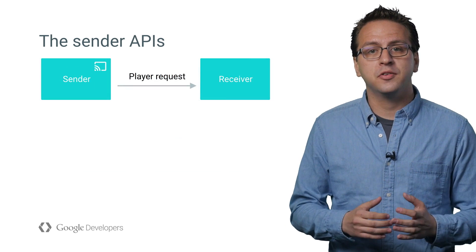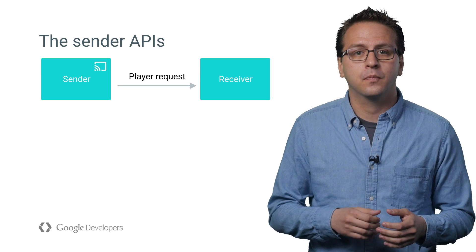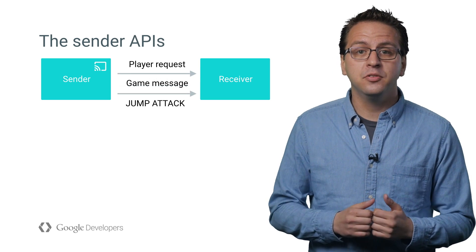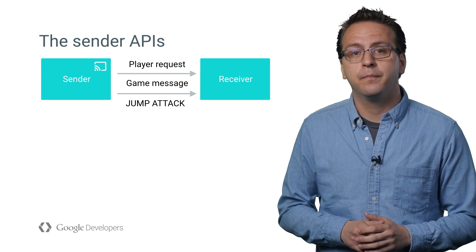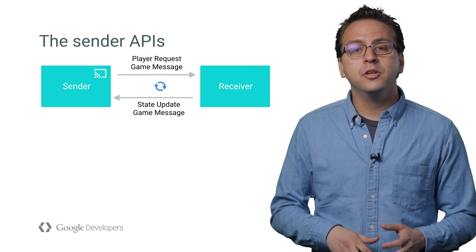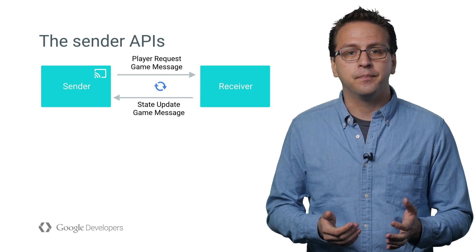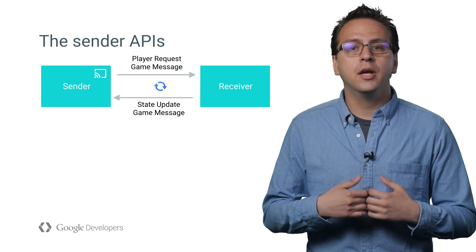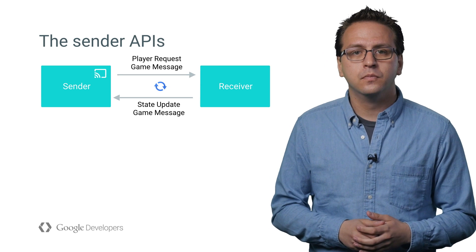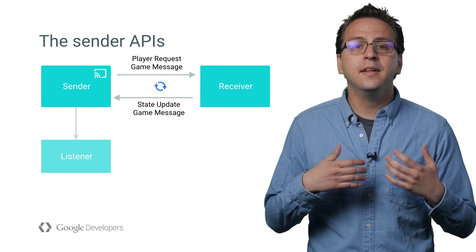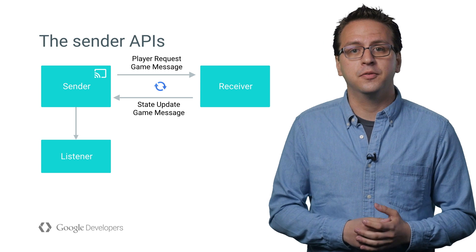A player request is a message used to register new players and change their player state. A game message represents players' actions. Its contents are entirely up to your game. The Game Manager client always has a snapshot of the receiver state and it's updated automatically. This means you can query any value at any time, like the number of players or the lobby state. You can attach a listener to get notified when something changes or when a game message is received.